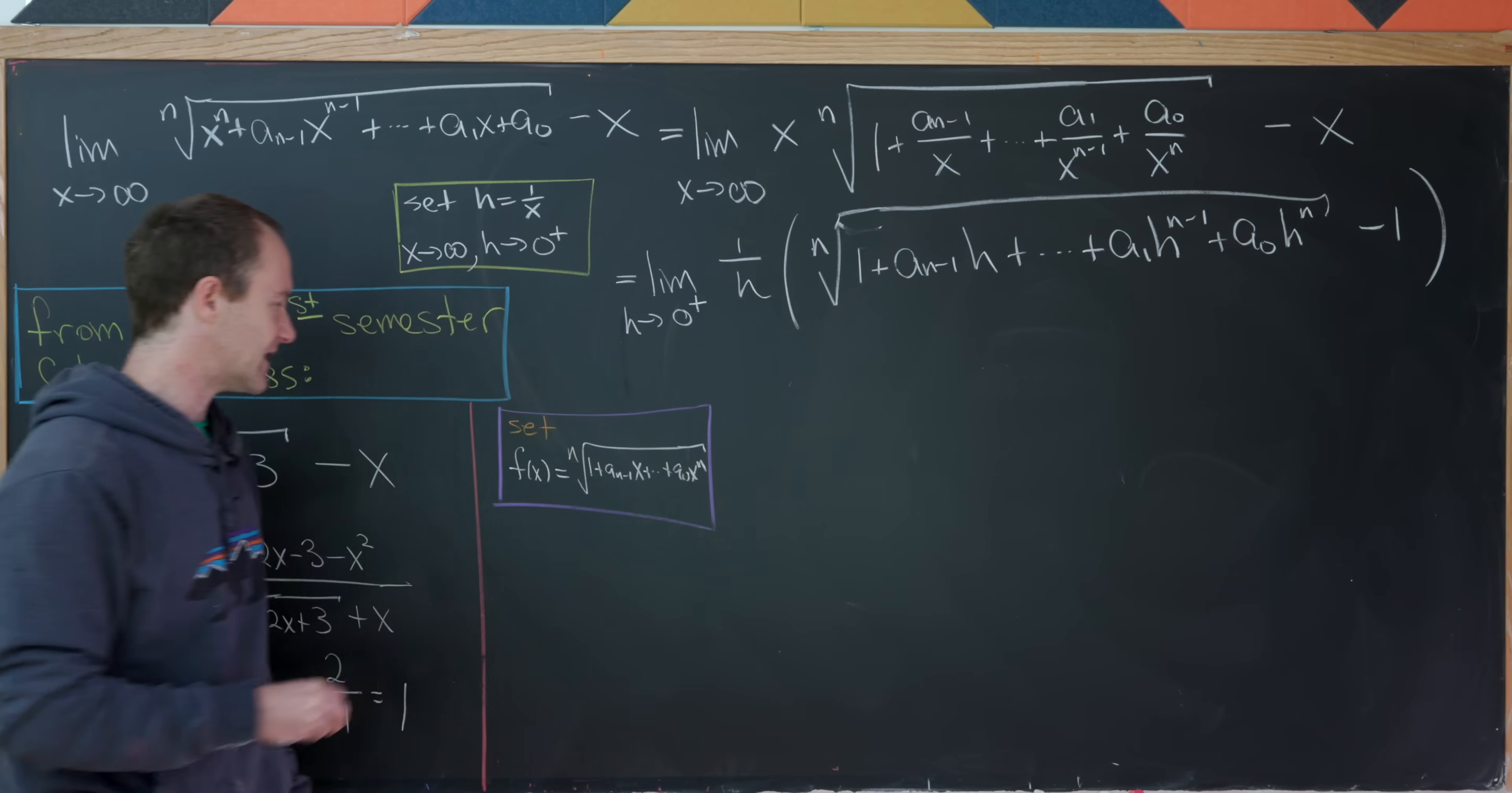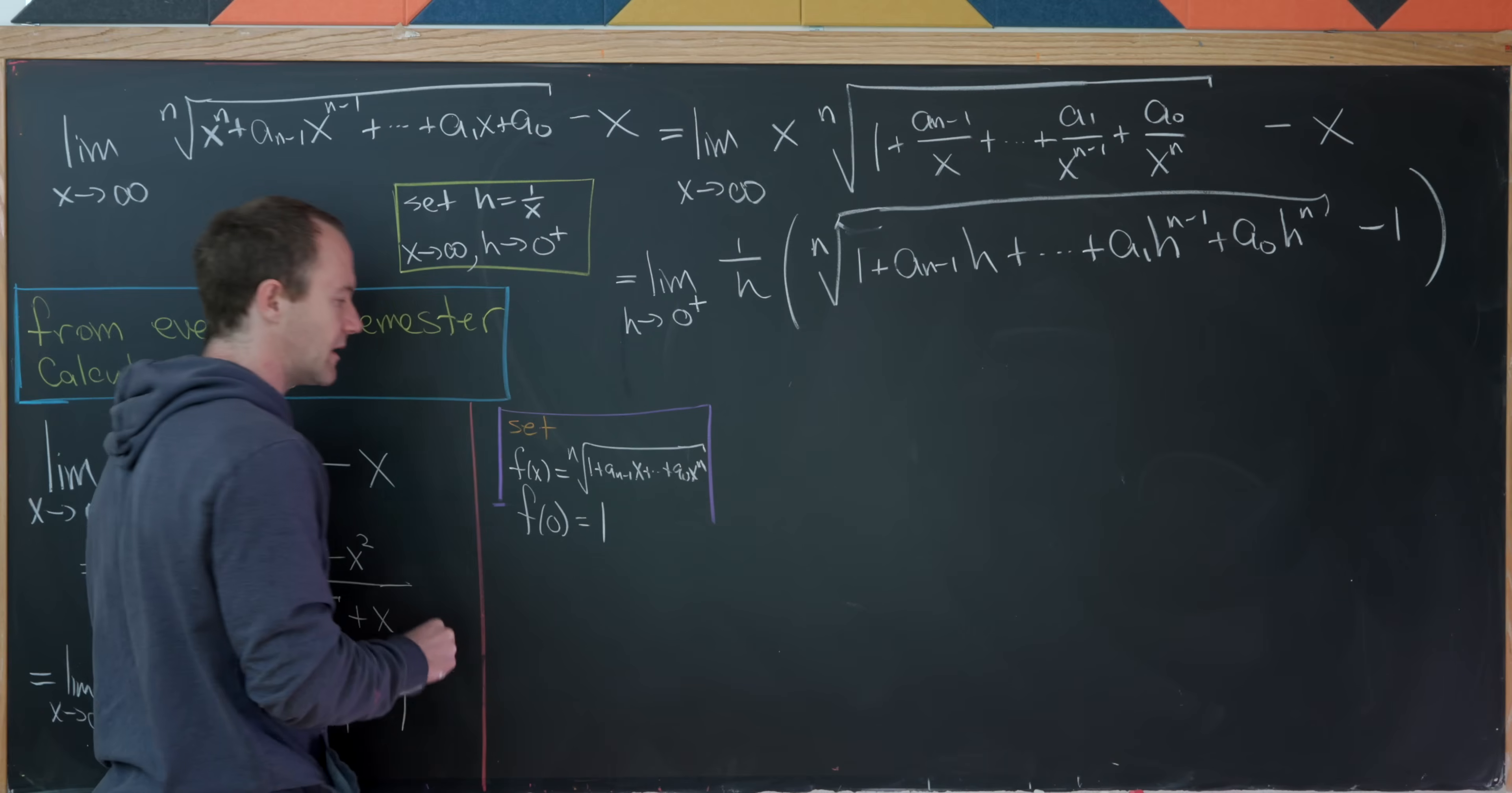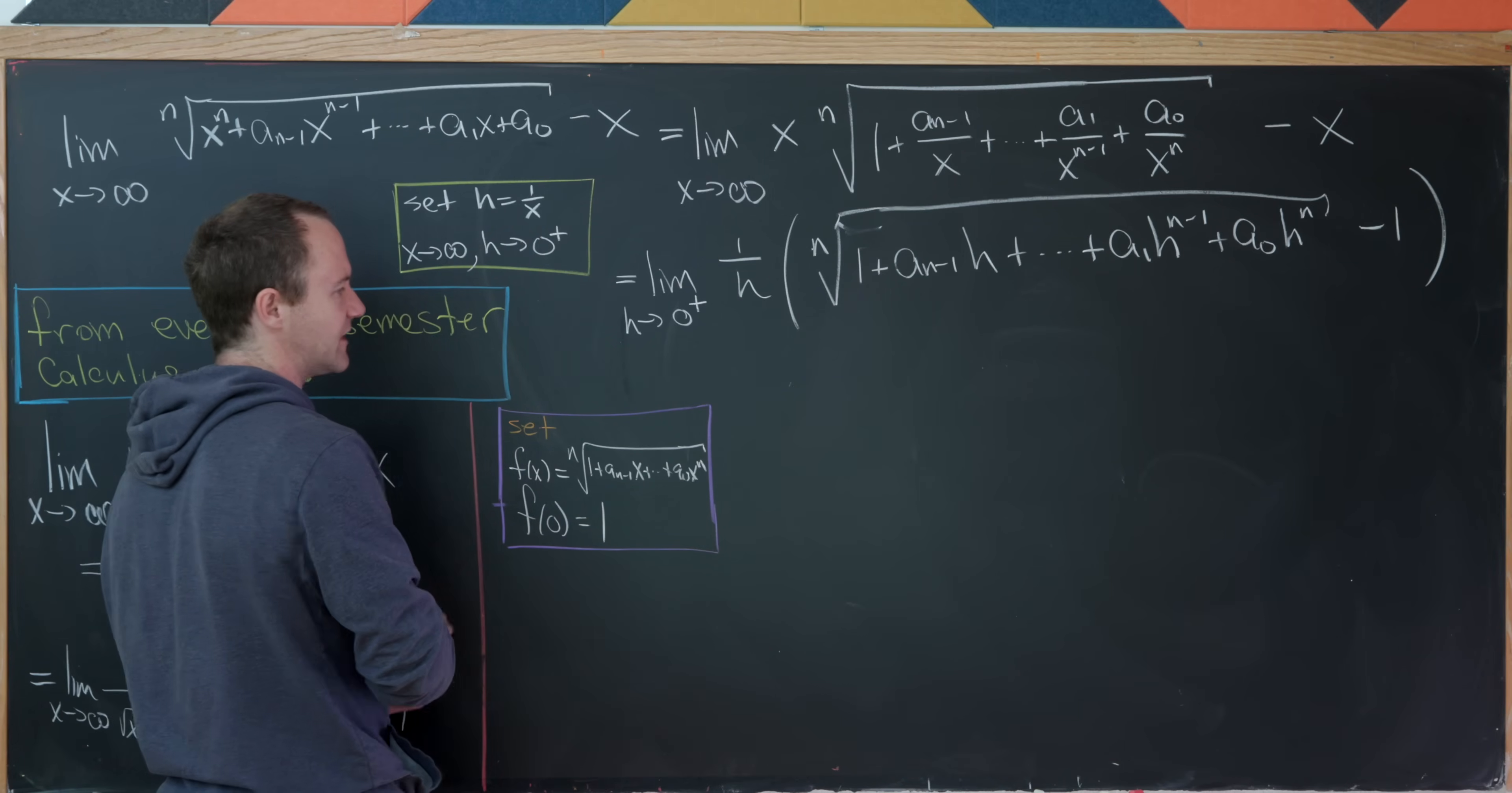So that's my definition of f of x. But let's notice that f of 0 is simply equal to the number 1. That's pretty obvious just by replacing all of the x's with 0. Okay, but notice what do we have here?